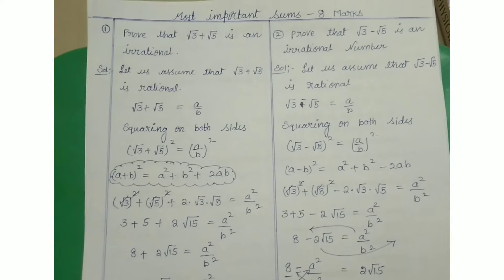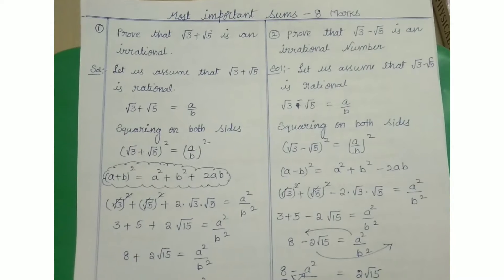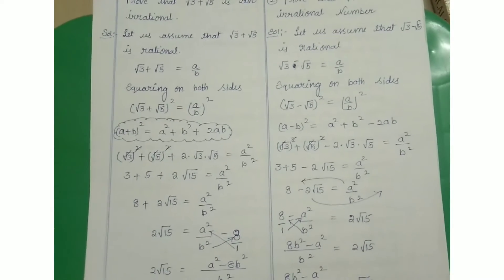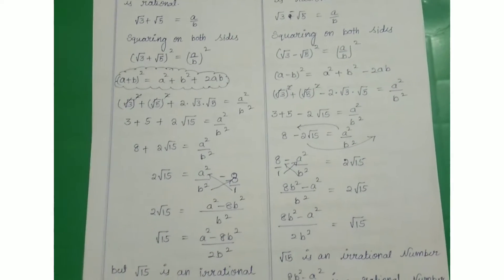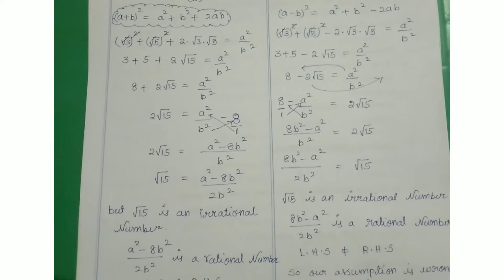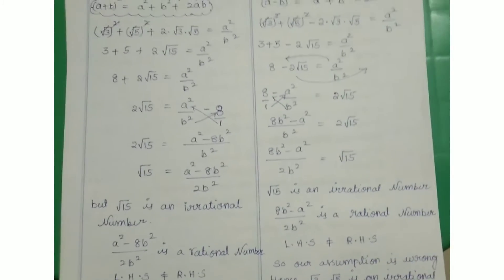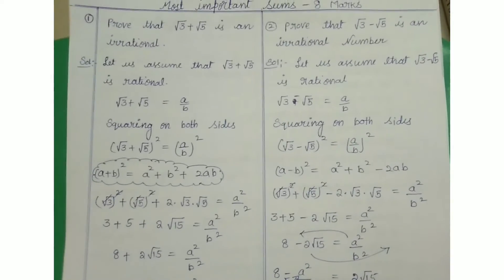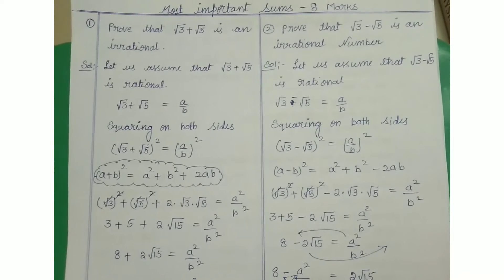Coming to question number one: prove that √3 + √5 is an irrational number. You can see the solution here. Question number two: prove that √3 − √5 is an irrational number.